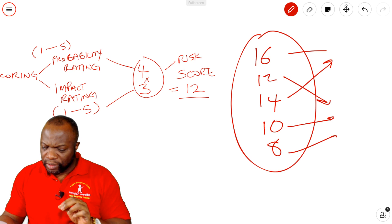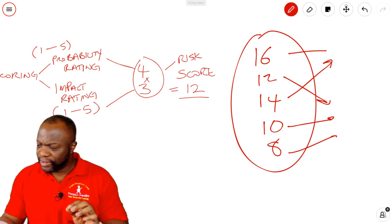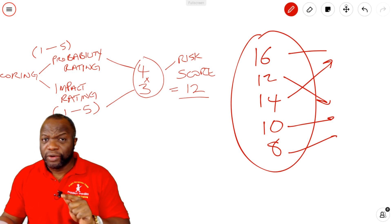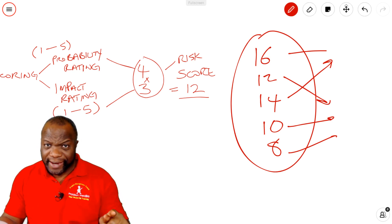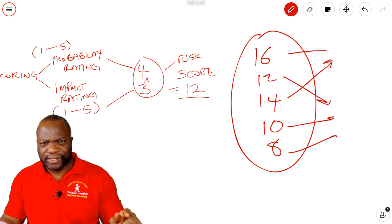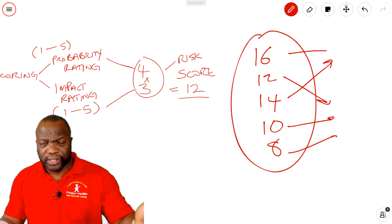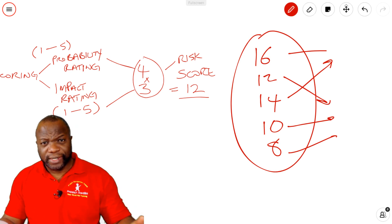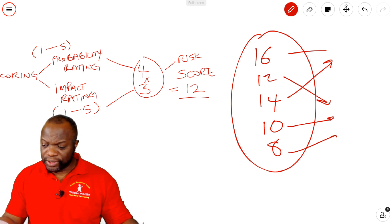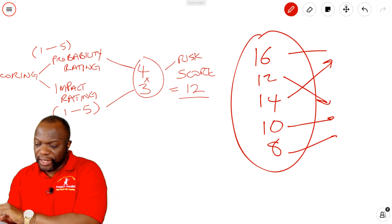Let's read page 419. It says, perform qualitative risk analysis is the process of prioritizing individual project risks for further analysis. That further analysis is what we will do in the other processes such as quantitative, perform quantitative risk analysis, plan risk responses and so on. The key benefit of this process is that it focuses on high priority risks.